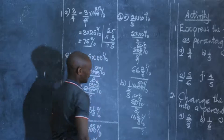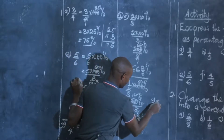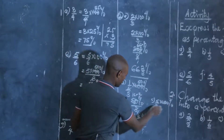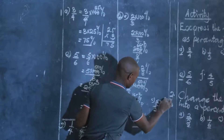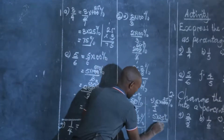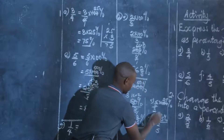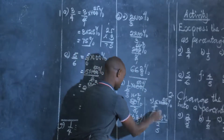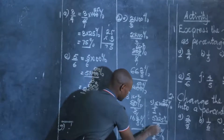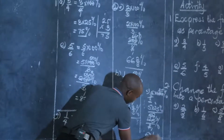Number two (c): express 5 out of 8 times 100%. Which number can divide both 8 and 100? That is 4: 100 divided by 4 is 25, and 8 divided by 4 is 2. So we have 5 times 25 percent divided by 2. Arranging vertically: 5 times 25 is 125, out of 2 percent. 2 into 12 is 6, and 2 into 5 is 2 remainder 1, so it is 62 and a half percent.